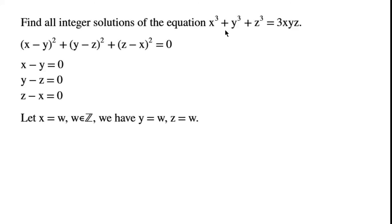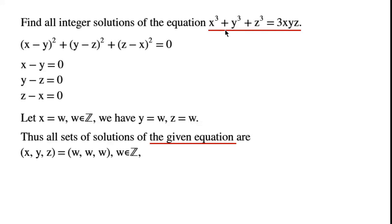That means x equals w, where w is an integer. We have y equals w, z equals w. Thus all sets of solutions of the given equation are: x, y, z equals (w, w, w) where w is an integer, or x, y, z equals (u, v, minus u minus v) where u and v are integers.